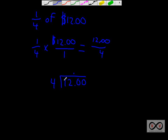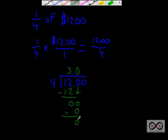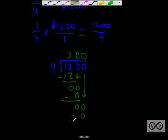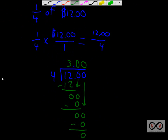We're dividing 12 by 4 to find that original one-fourth slice. 4 goes into 12 three times, since 3 times 4 is 12. Subtract: 12 minus 12 equals 0. Bring down the zero — 4 goes into 0, zero times. 0 times 4 is 0. Subtract, get 0. So that original quarter slice is $3.